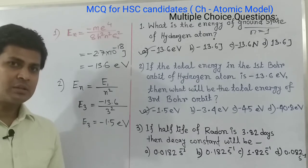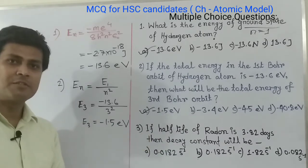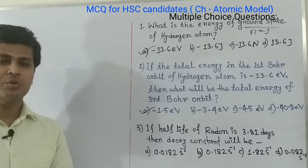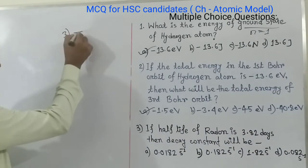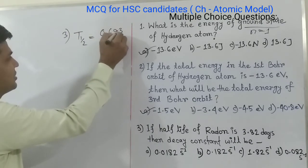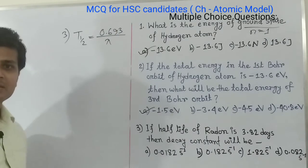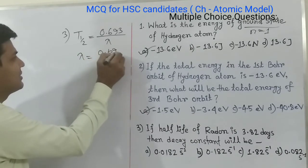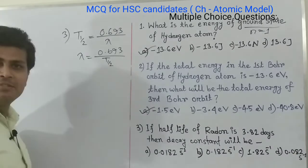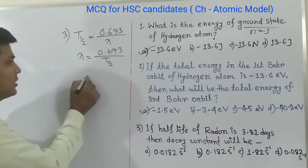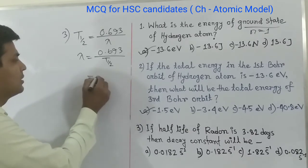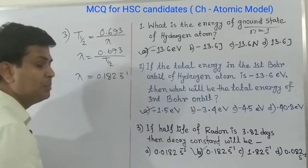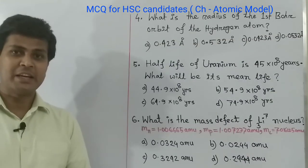MCQ 3: If the half-life of radon is 3.82 days, the decay constant will be? Using the formula t half equals to 0.693 divided by lambda, we rearrange to get lambda equals to 0.693 divided by t half. Putting in t half equals to 3.82 days, we get the answer 0.182 per day. The correct answer is option B.